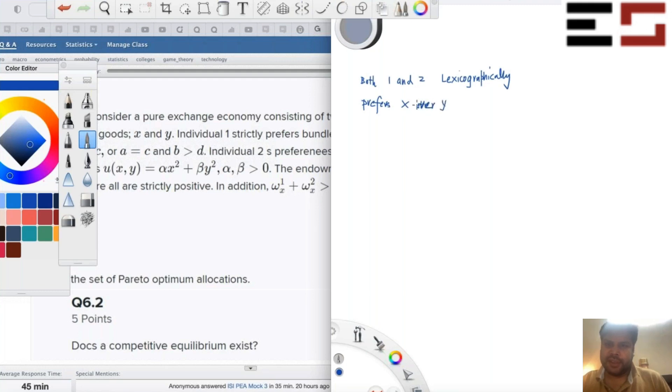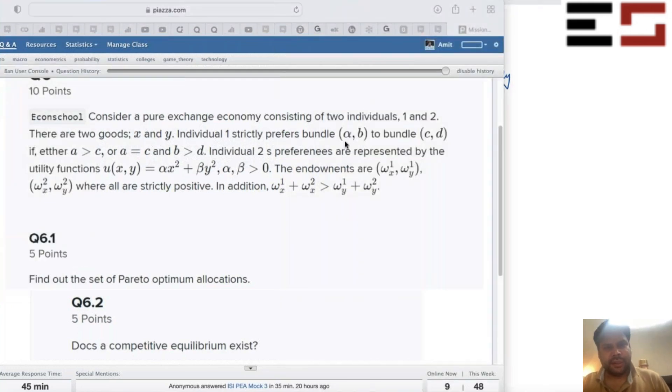So basically what that means is, you know, exactly this. Individual 1 strictly prefers bundle AB to CD if A is greater than C, or A is equal to C and B is greater than D.